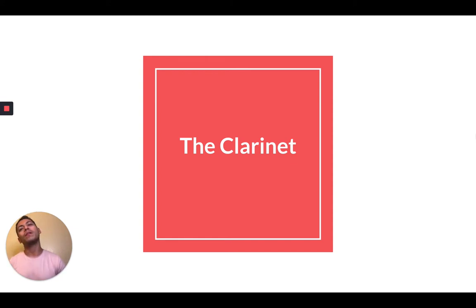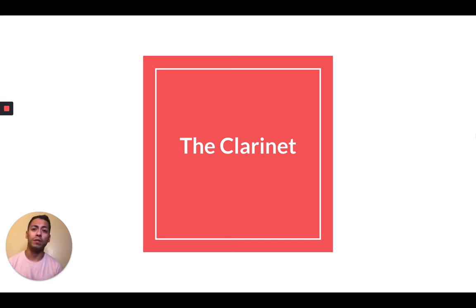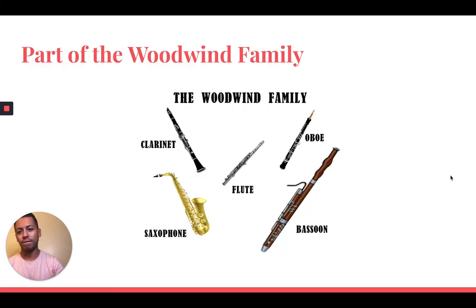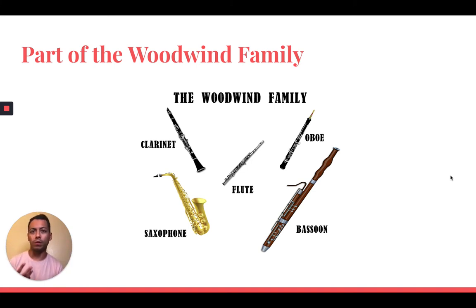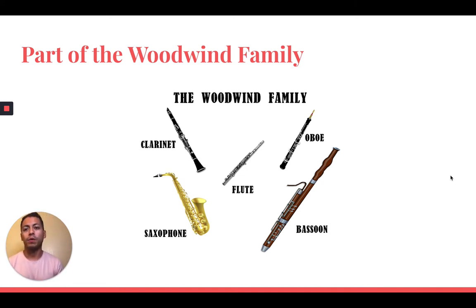Hello everyone, I hope you're doing well. My name is Mr. Corpus and I'm going to be going over the clarinet — a brief overview with a few demonstrations and some history, just to see if this is the instrument you would like to play. So the first thing you want to know is that it is part of the woodwind family. In band we have a few different families: the woodwind family, which includes flute, oboe, bassoon, clarinet, and saxophone; then you also have brass, which is trumpet, French horn, trombone, euphonium, and tuba; and you also have your percussion family as well.